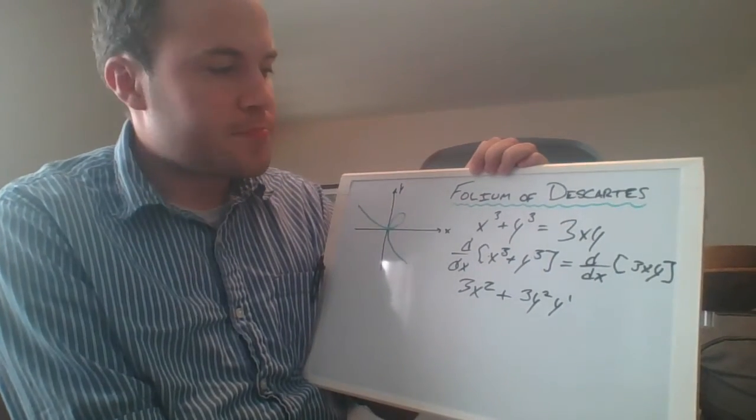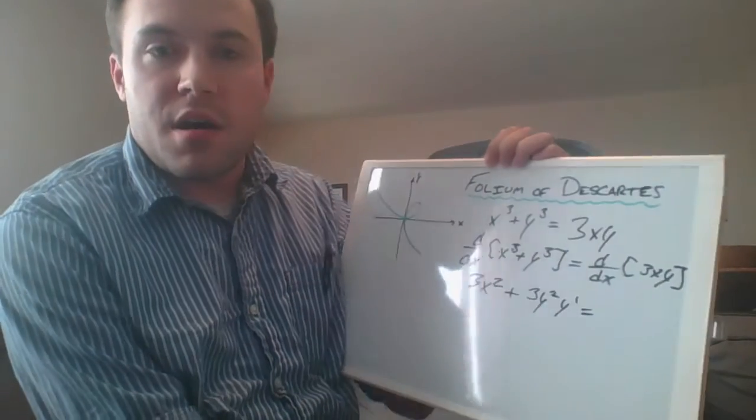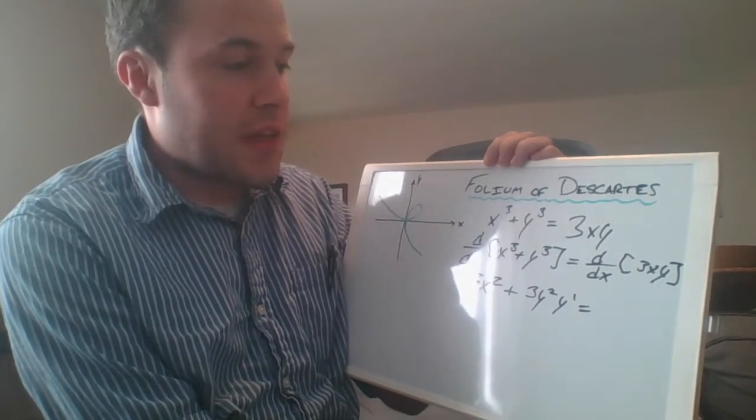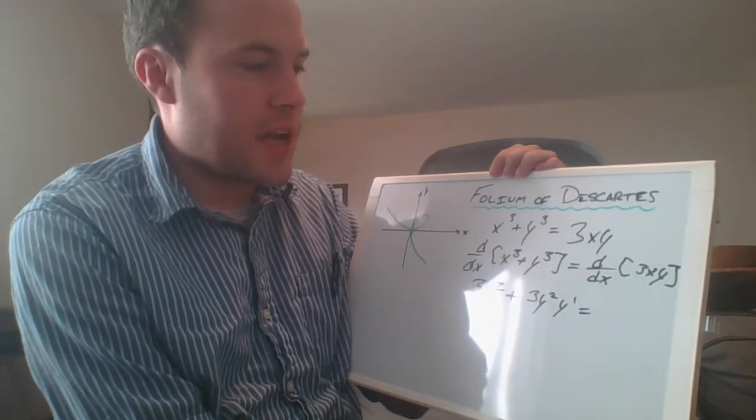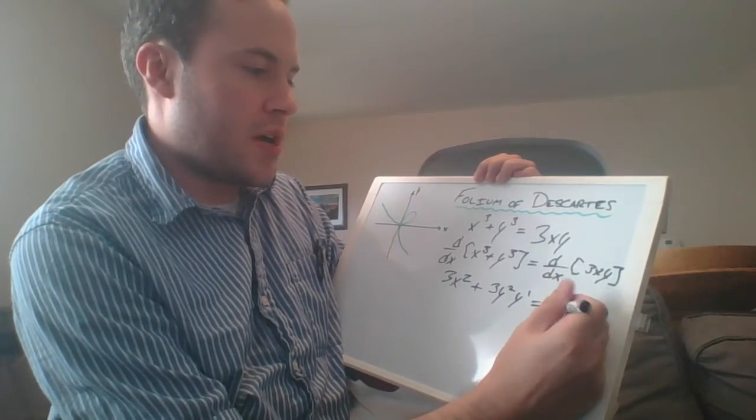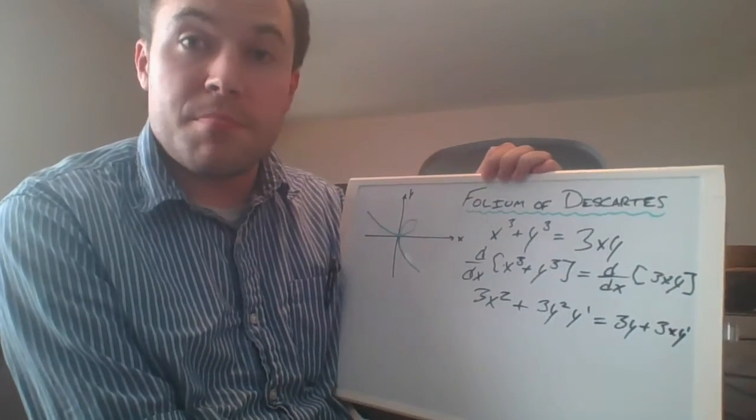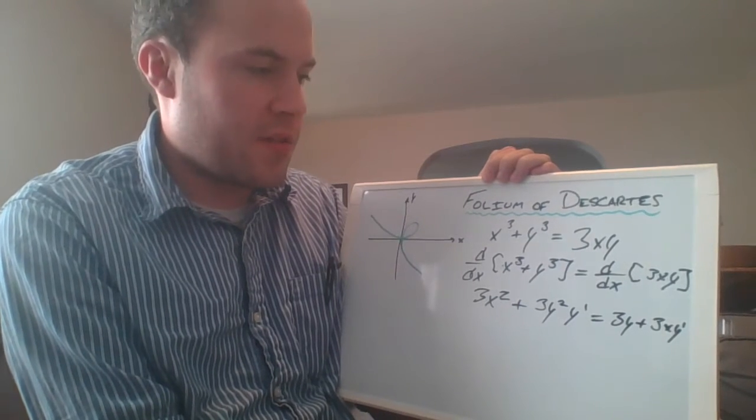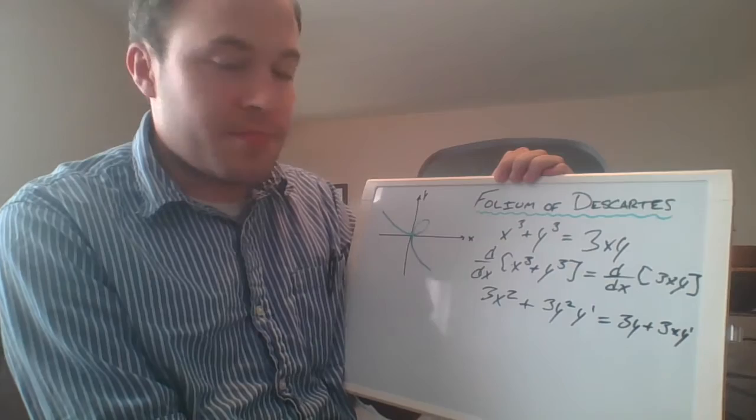Now that's going to be equal to the derivative of 3xy. For that one we have to use the product rule since we're thinking of y as a function of x, so we're going to end up with 3y plus 3xy times y prime. I'll let you fill in the details there if that seems suspicious to you.